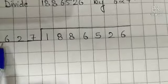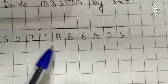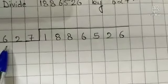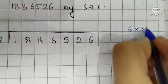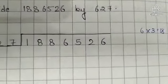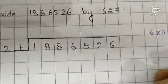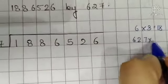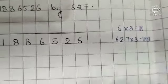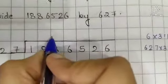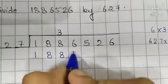Now see the first digit of divisor which is 6 and take two digits of dividend and divide 18 by 6. So 6, 3's are 18. Now multiply 627 by 3. So 627 multiplied by 3 is equal to 1881. So 627, 3's are 1881.